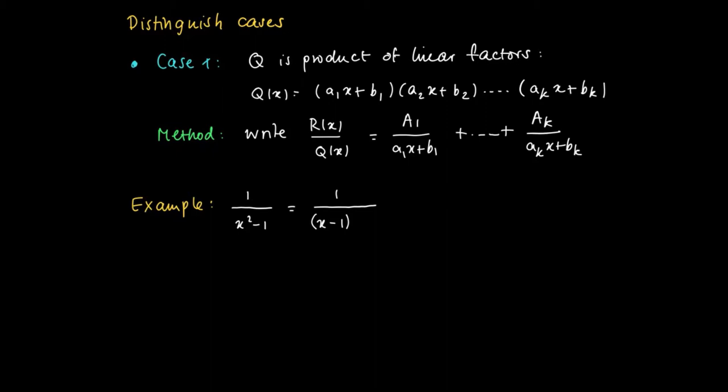Our remainder term in the last example was 1 over x² - 1, and x² - 1 is a product of (x+1) times (x-1). So we can factorize x² - 1 into two linear factors. So we try to write this fraction as A₁/(x+1) + A₂/(x-1). So how to find A₁ and A₂?